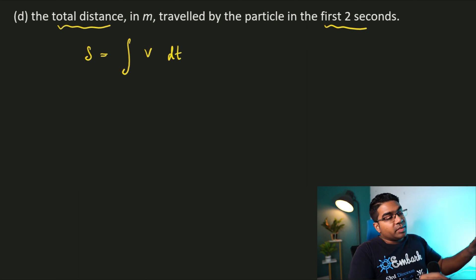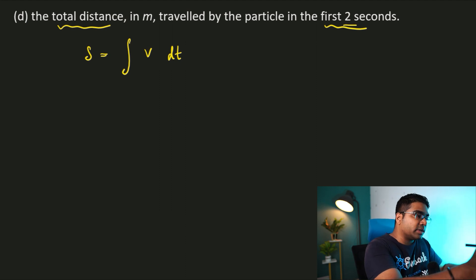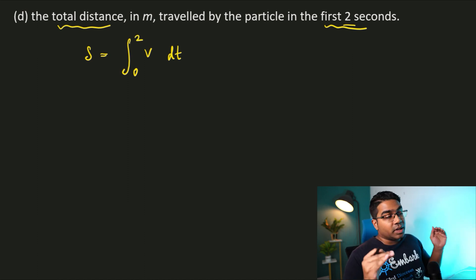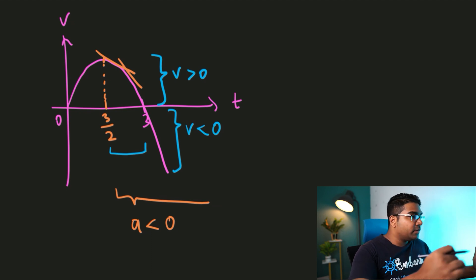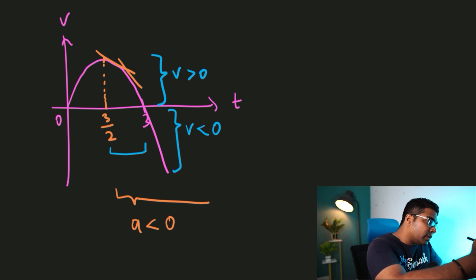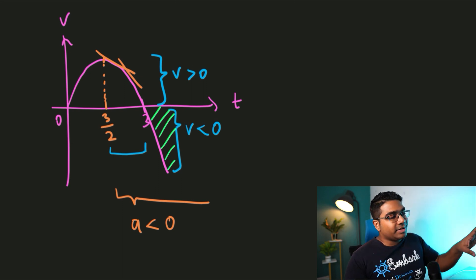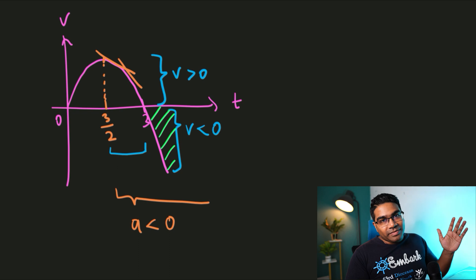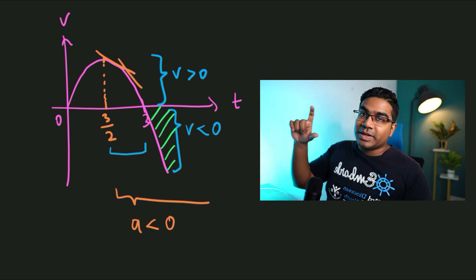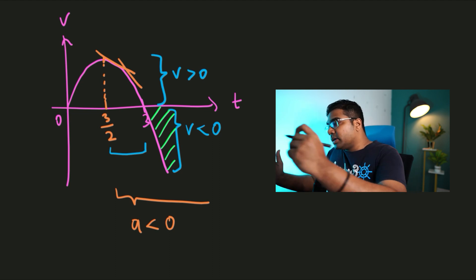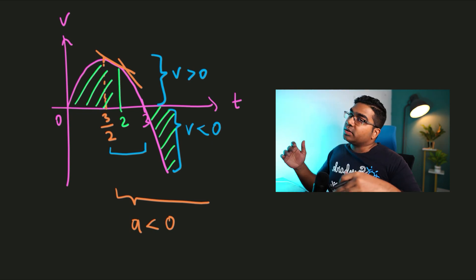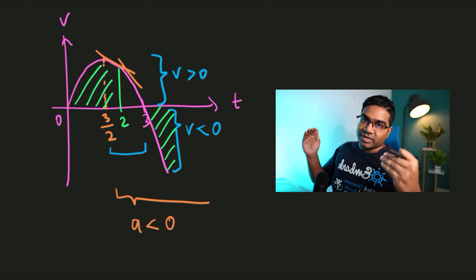We can use definite integration with limits since they want the distance in the first 2 seconds — from time 0 to 2. We have to be careful: looking at our graph, if time goes past 3 seconds we enter the negative region, and integrating the negative region gives a negative area value. In that case we'd need to add the modulus of the negative area. But here we are only going from 0 to 2 seconds, which is all in the positive region, so there's no need for that adjustment.